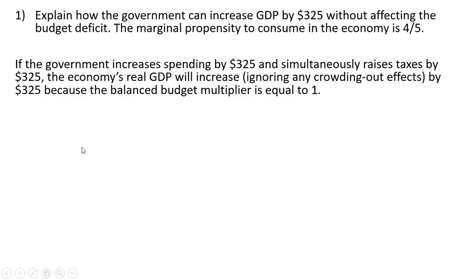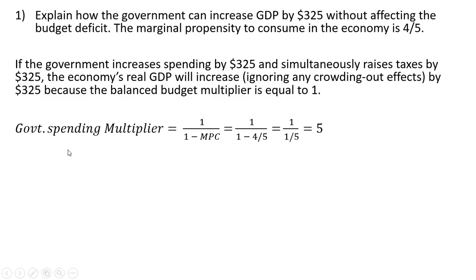We can look at this with numbers. The government spending multiplier is given by this formula, where the MPC in this problem is four-fifths. So calculating the government spending multiplier, we're going to get 5.